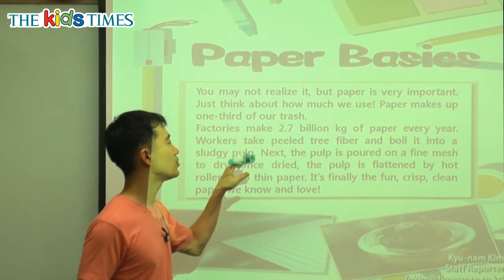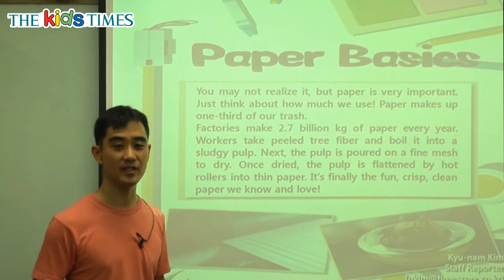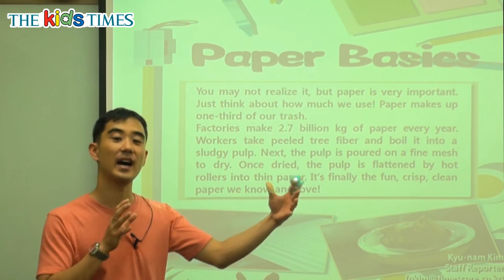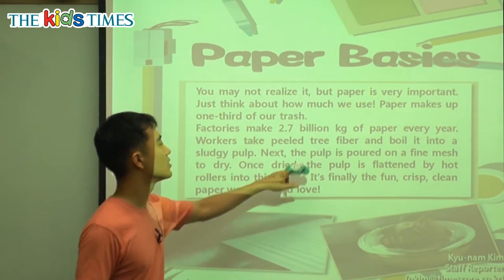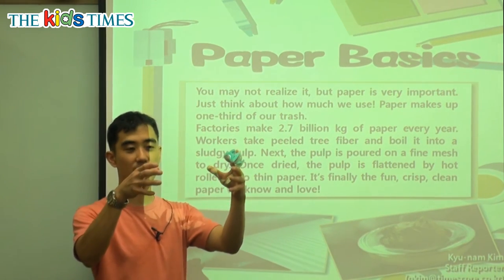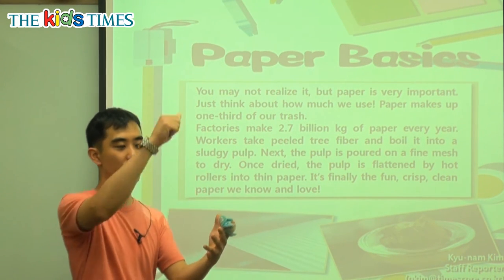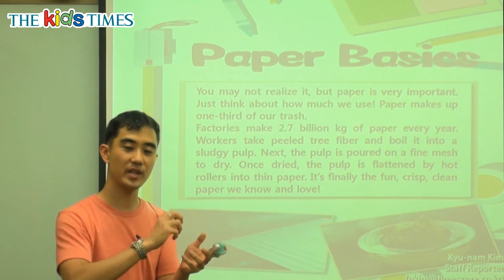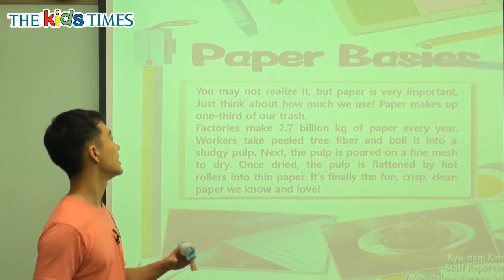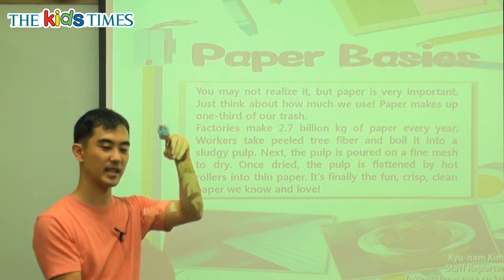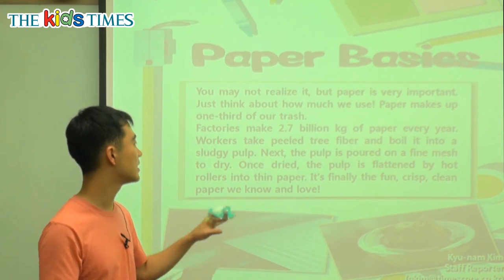Factories make 2.7 billion kilograms of paper every year. Billion is nine zeros. Every year, workers take peeled tree fiber — the fiber is the main part of the tree, it looks like little strings — and they peel it like we peel an apple or an orange. They boil it in hot water into a sludgy pulp. It's like a sticky jelly, with lots of big pieces in liquid.